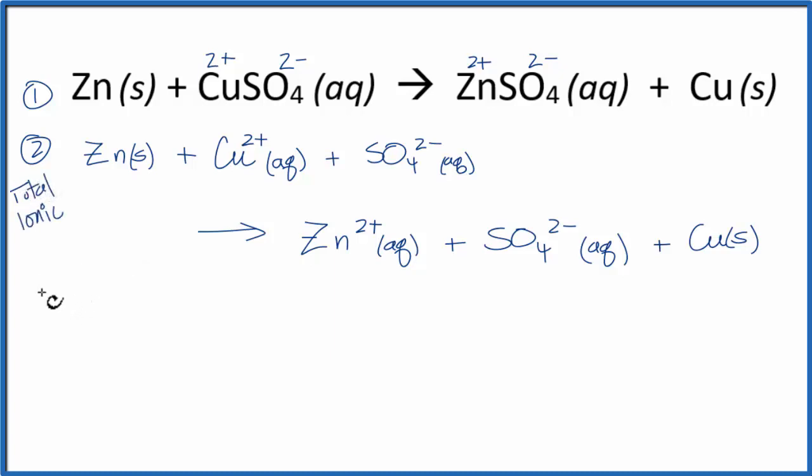Finally, we write the net ionic equation. For the net ionic equation, we're going to cross out anything that appears on both sides of the equation. So we have our zinc solid, that's now zinc 2 plus aqueous, that's different. Cu2+ is now Cu, that's different. But the SO4 2 minus aqueous, the sulfate ion, that's the same on both sides. So we'll just cross that out. And now we can write our net ionic equation.